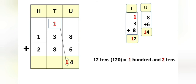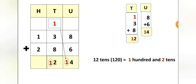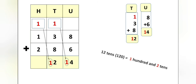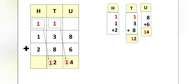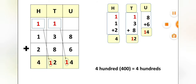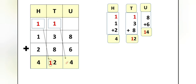120 has 1 hundred and 2 tens. Let us write 2 tens in the tens place. Now children, can we write 100 in the tens place? Of course not. 100 will go as a carry over to the hundreds place. Now let us add the hundreds place. We have 1 hundred and 2 hundreds already there, and 1 new hundred has joined. So 1 plus 1 plus 2 is equal to 4. We get the answer 400. So let us write 4 in the hundreds place. After adding 138 and 286, we get the answer 424.